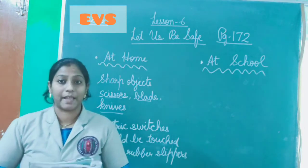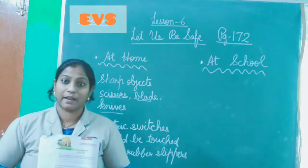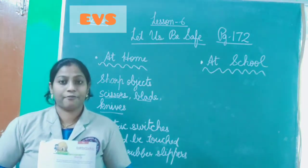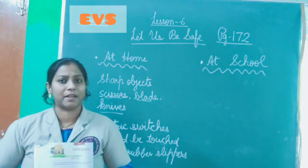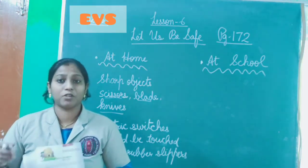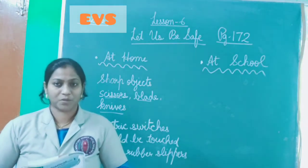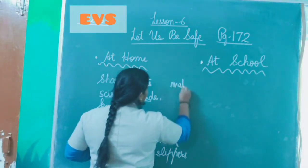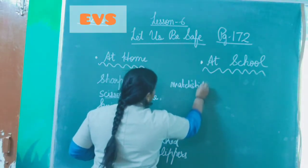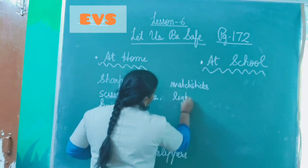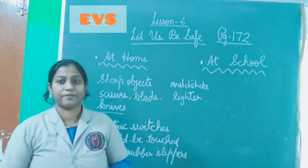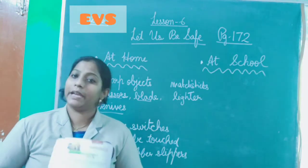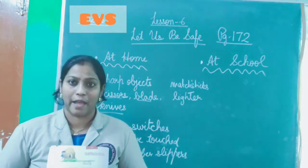The next dangerous thing is matches and lighters. When you go to the kitchen, there is a cylinder full of gas. If you light a match or a lighter near it, it can be very dangerous for you. Don't use matches and lighters by yourself. These are another dangerous thing we find in our house, and if not used properly, they can cause serious damage to your life.